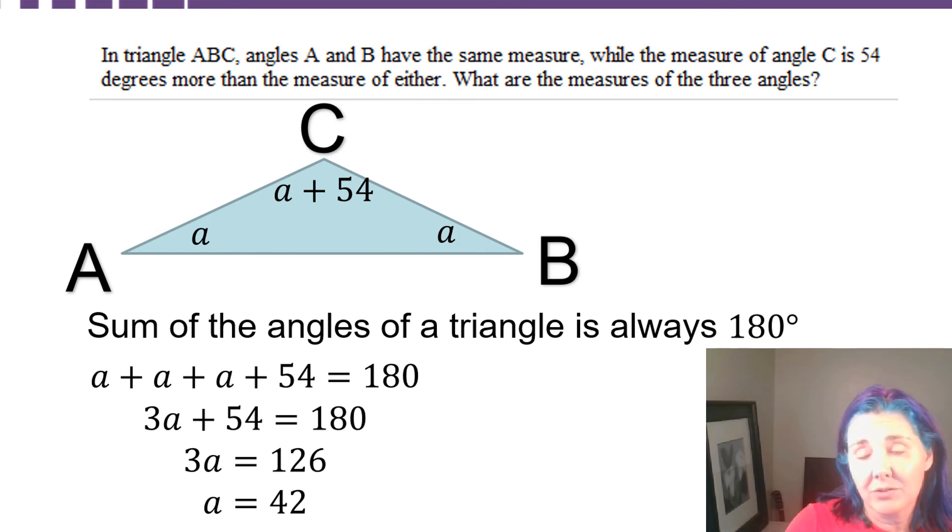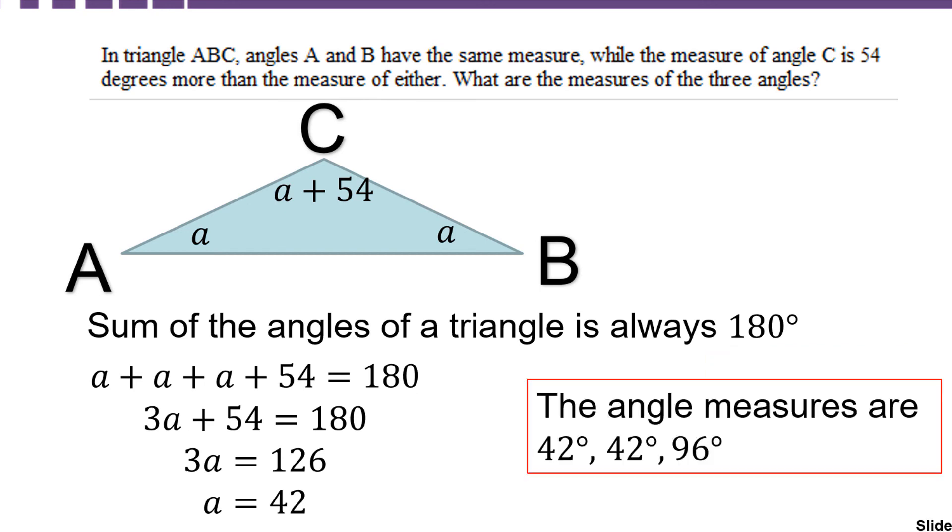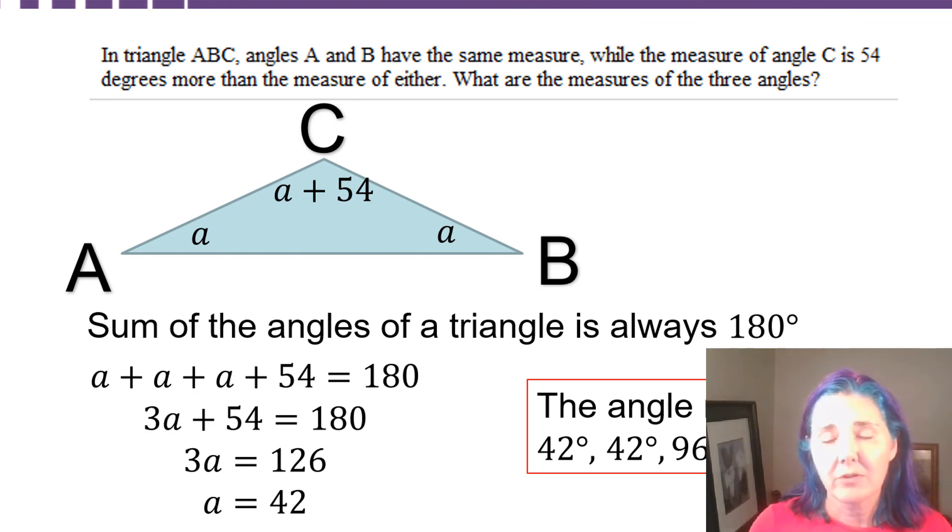But now we have to make sure we answer the question. We are being asked for the measures of all three angles. Angle C is A plus 54. So, 42 plus 54 is 96. So, the measures of the angles are 42 degrees, 42 degrees, and 96 degrees.